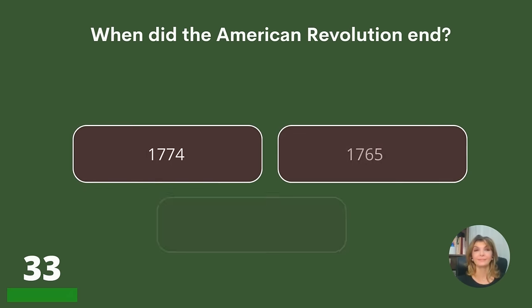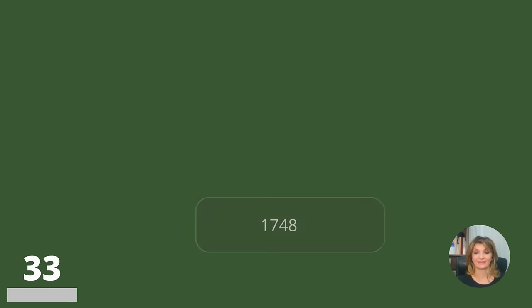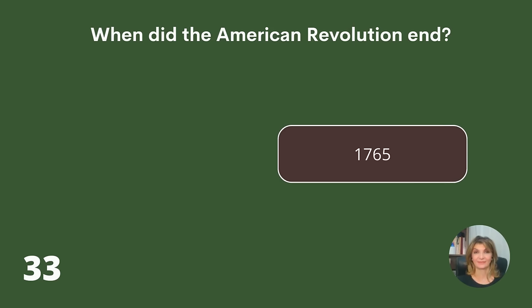When did the American Revolution end? 1774, 1765, or 1748? Answer: 1765.